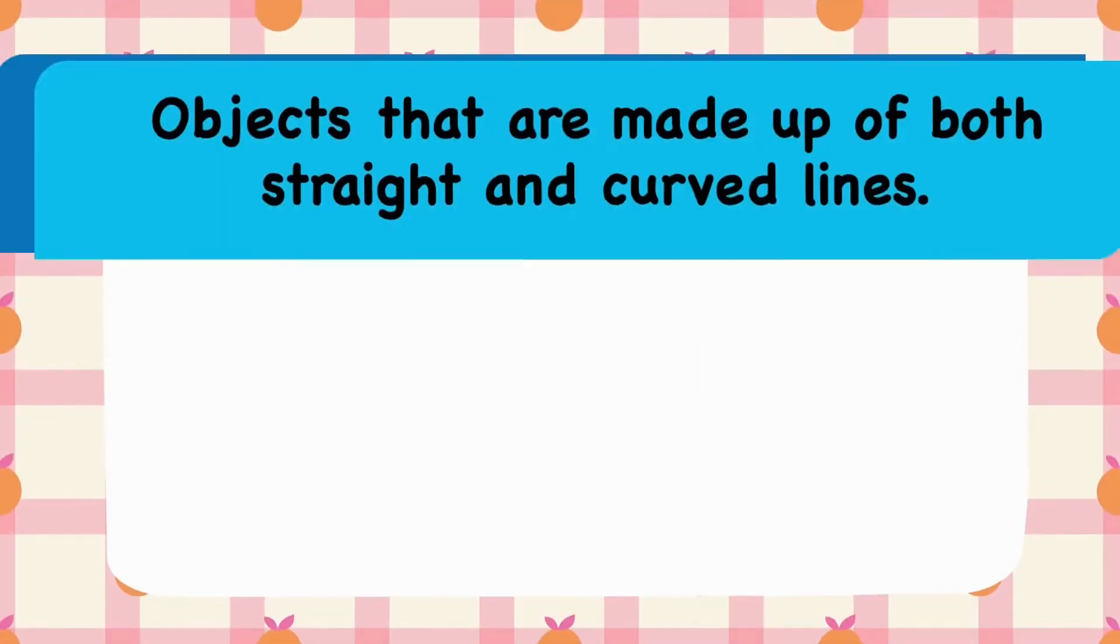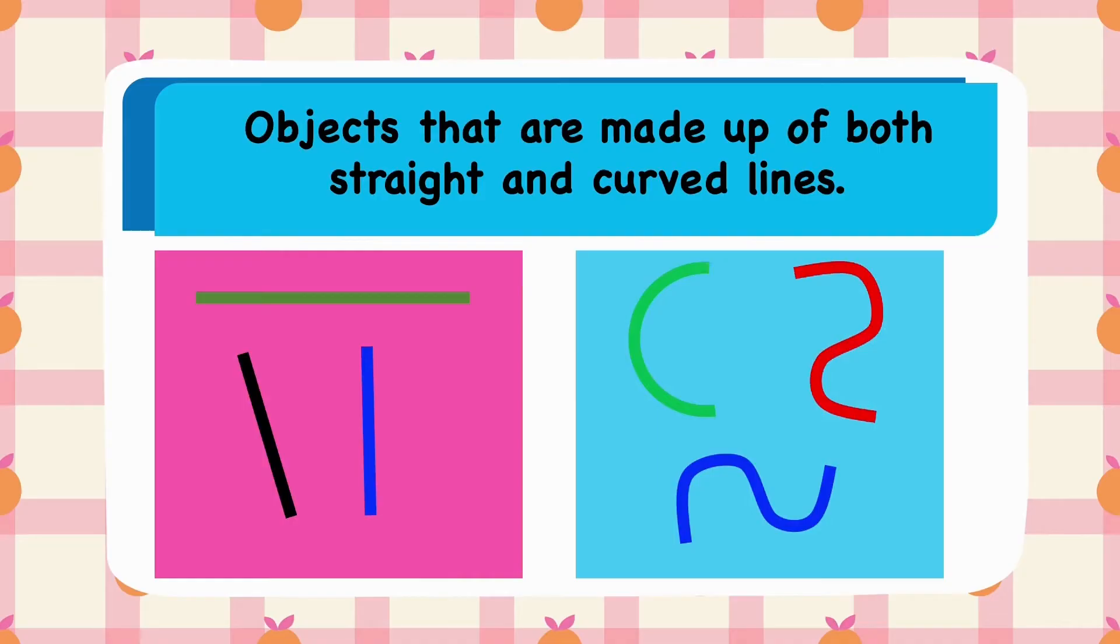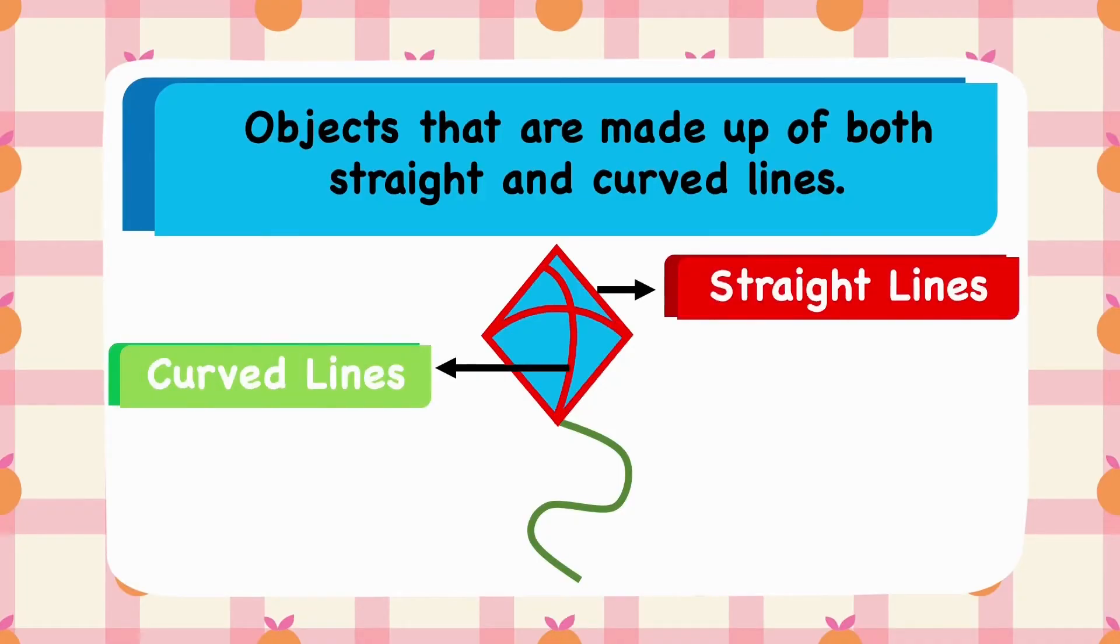Now, we have few examples that are made up of both straight and curved lines. For example, a kite. It has both straight lines and curved lines.